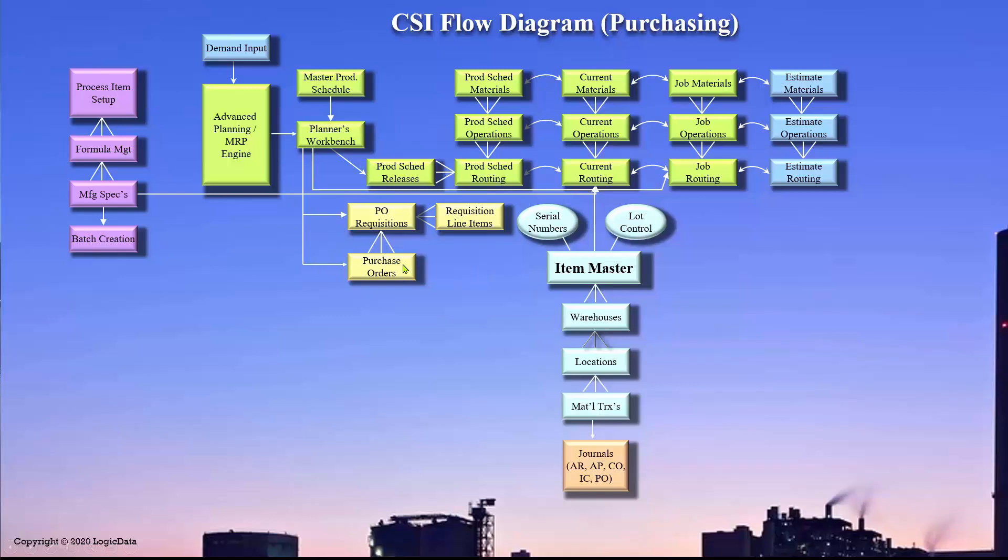There are two types of purchase orders within SightLine. Purchase orders that are just regular POs that have individual line items for specific quantities on specific dates, or blanket purchase orders.